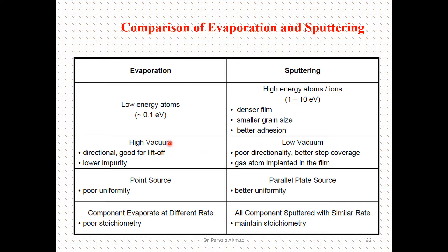In evaporation we normally utilize high vacuum, we can have directional depositions, and we can have lower impurity. Comparing this with sputtering: in sputtering we have low vacuum compared to evaporation, poor directionality, better step coverage, and gas atoms can be incorporated in the thin film in the form of impurity.